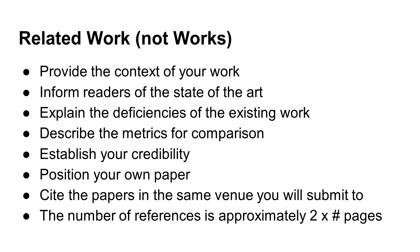Let's imagine you are writing a paper to be submitted to a conference or a journal of robotics. You should cite papers in that conference or journal, or related conferences or journals. If you do not cite any paper in that area, readers will likely reject your paper because they think your paper does not fit in the area. The number of references should be approximately 2 to 3 times the number of pages. If your paper has 10 pages, then citing 20 to 30 papers will be about right.